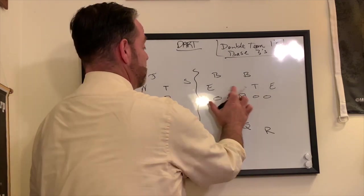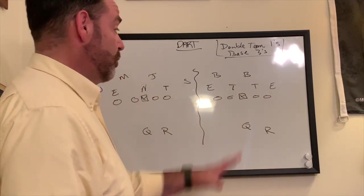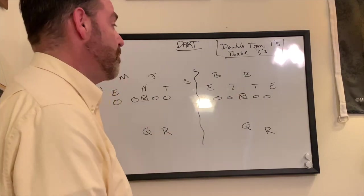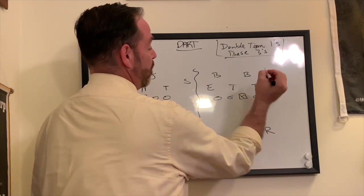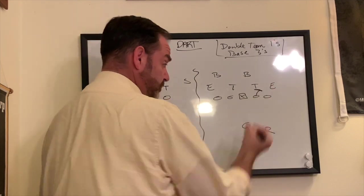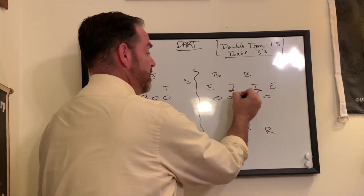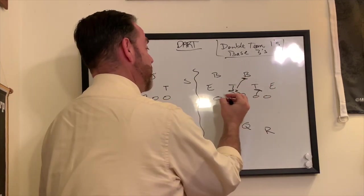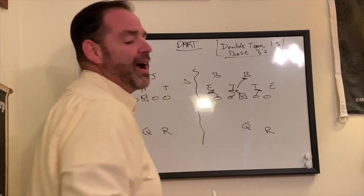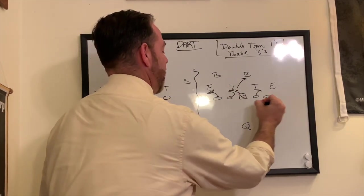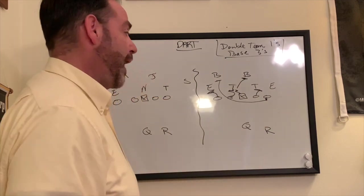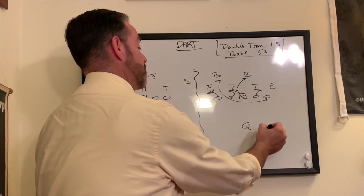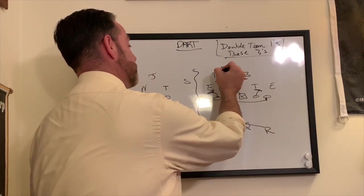So in this instance here, let's say we have a 31. We want to try to run that to the A gap bubble. And so we're going to run dart left here. So we'll base that three. We'll double team this guy to the backside. The play side tackle always stays on and then the backside tackle will wrap. And then of course we give it to the tailback here and he hits it up hard.